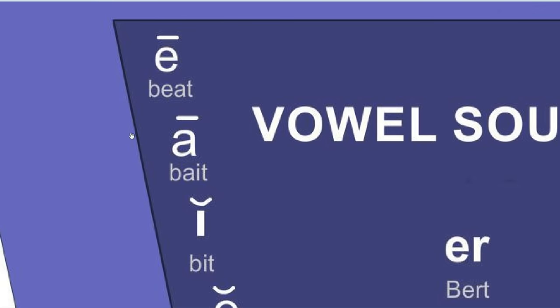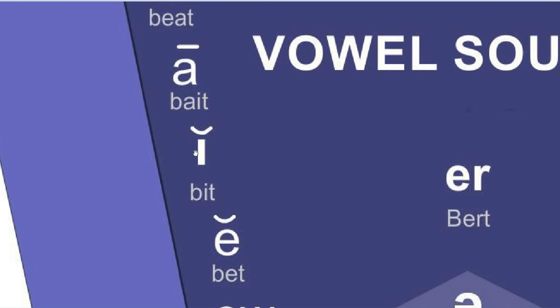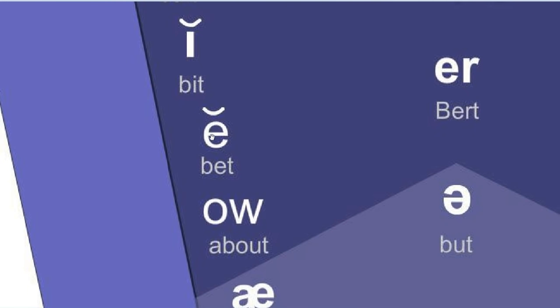A lot of people have difficulty with certain vowel sounds, but hopefully this lesson will make it easier for you. We have the vowel sound as in 'bait,' the vowel sound as in 'bit,' and the vowel sound as in 'bet.' Just those vowel sounds right there cause a lot of problems for a lot of people.